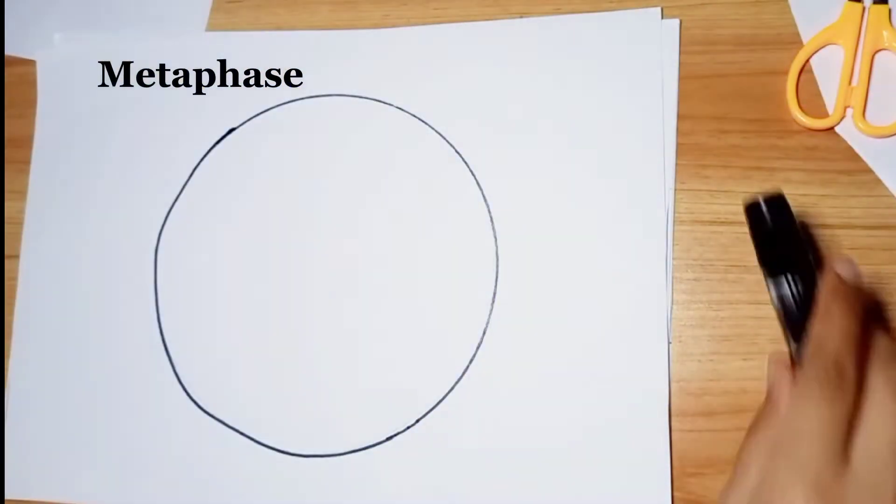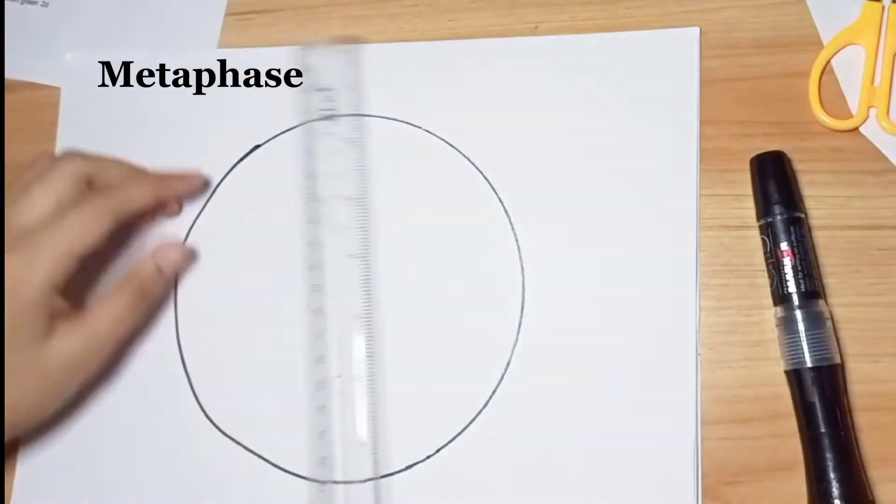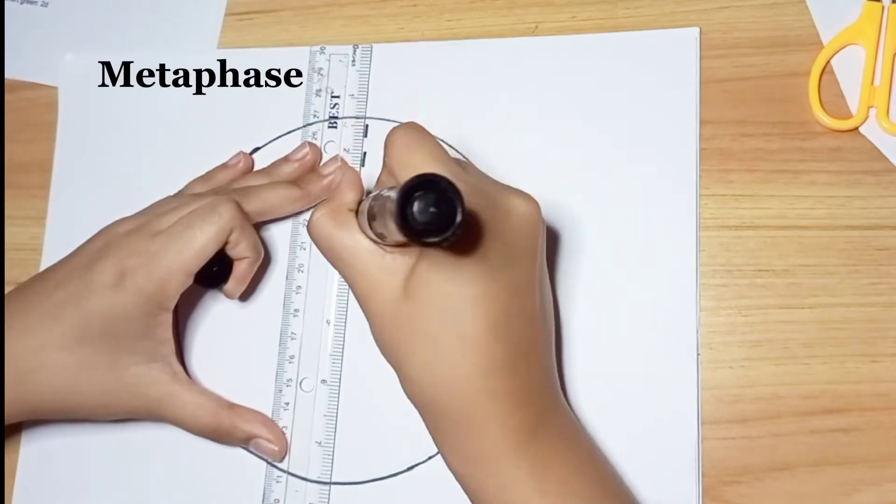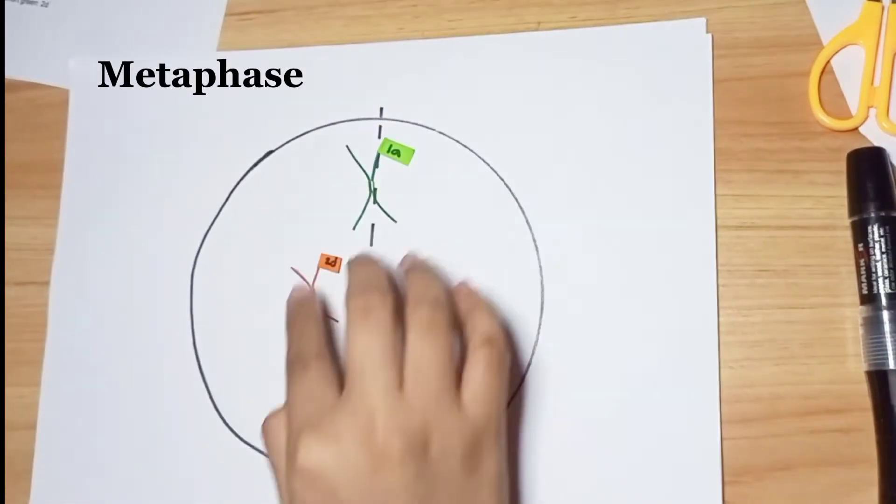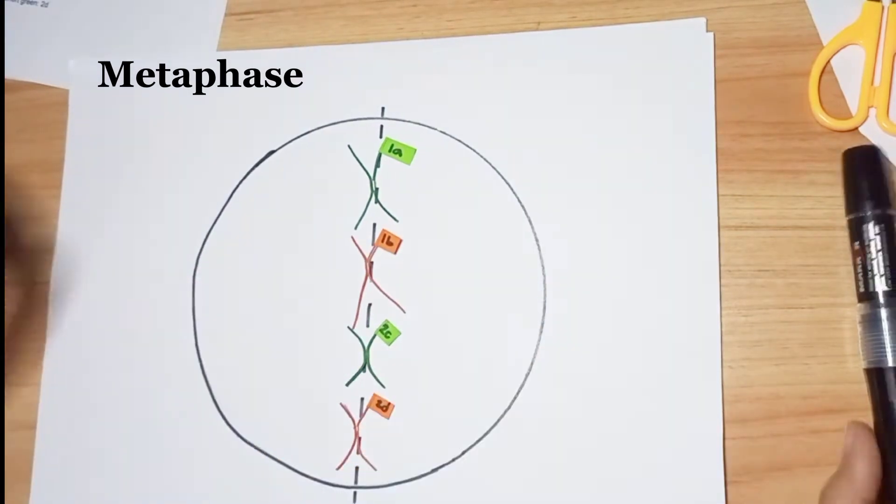Metaphase. In metaphase, the spindle has captured all the chromosomes and lined them up at the middle of the cell, ready to divide. All the chromosomes align at the metaphase plate at this stage.